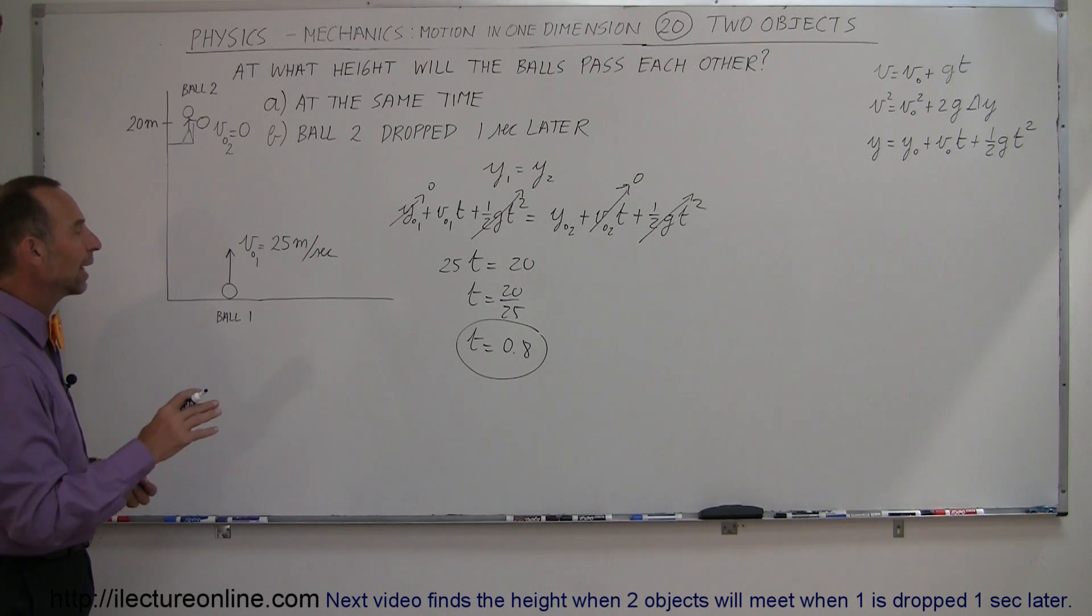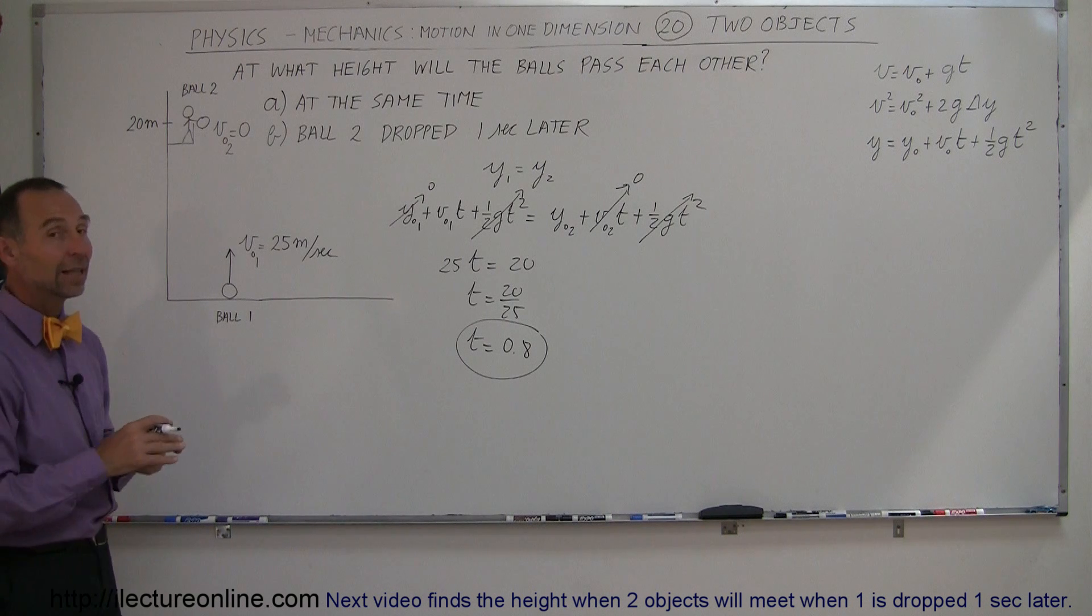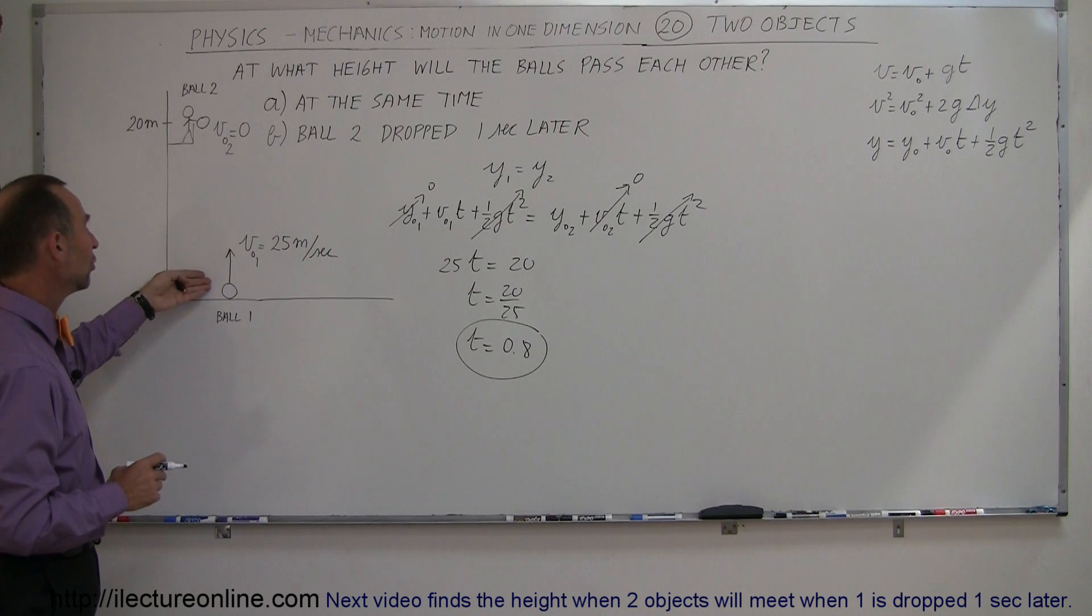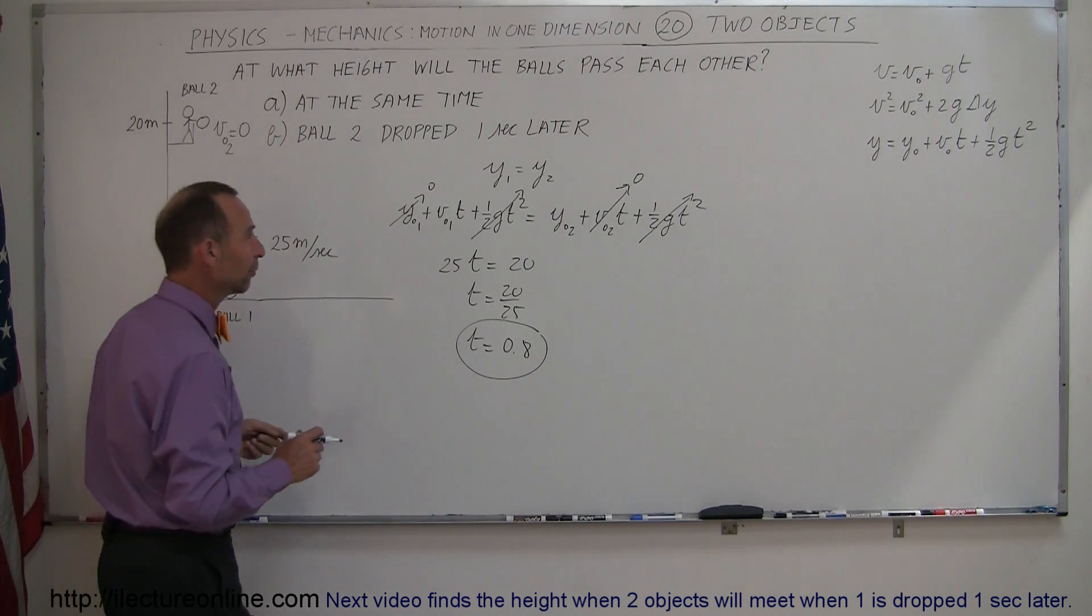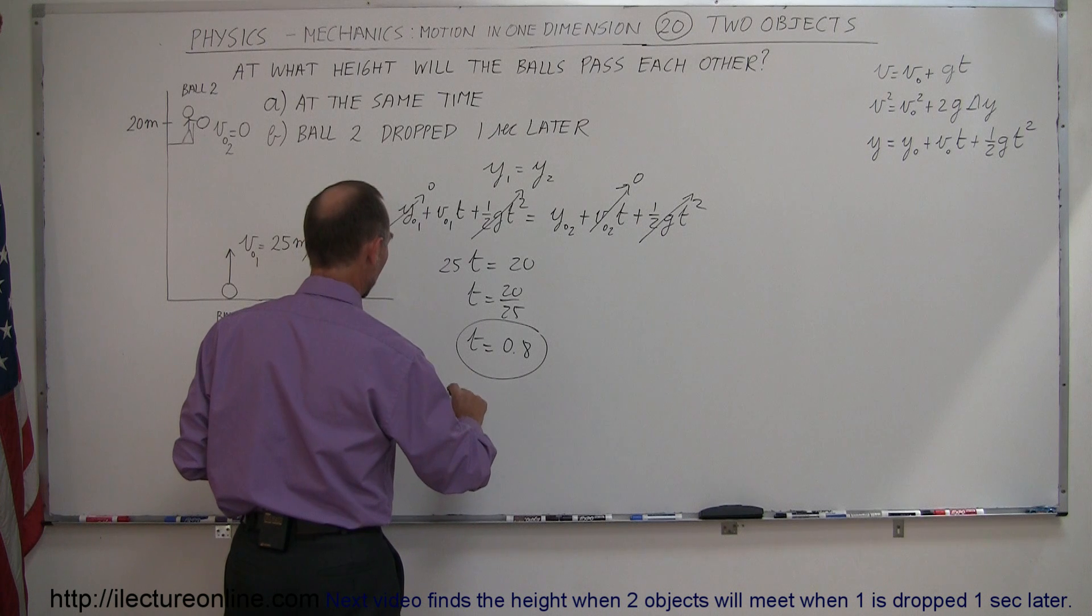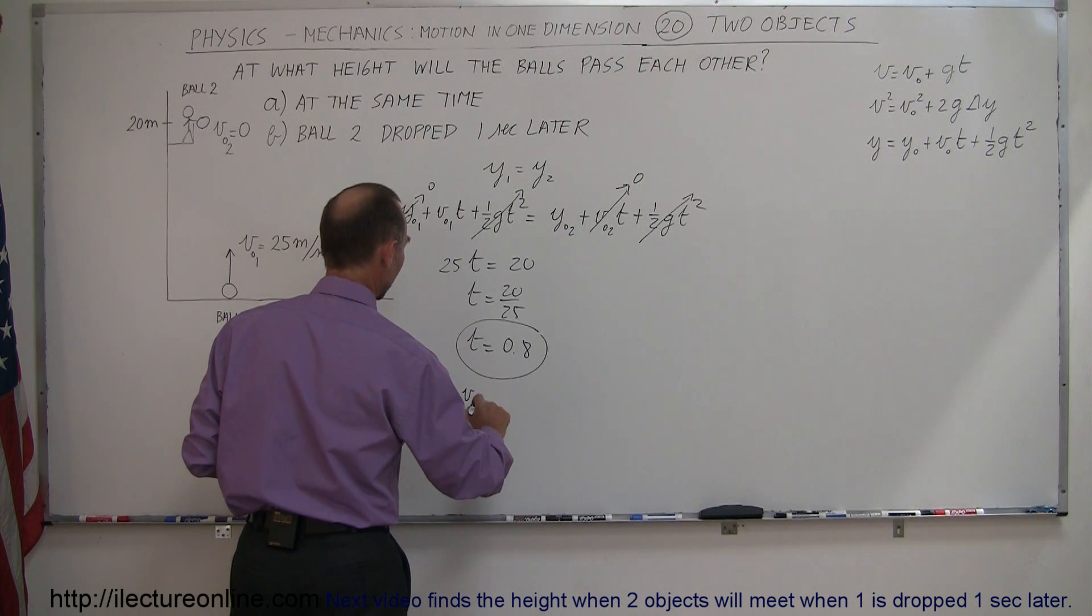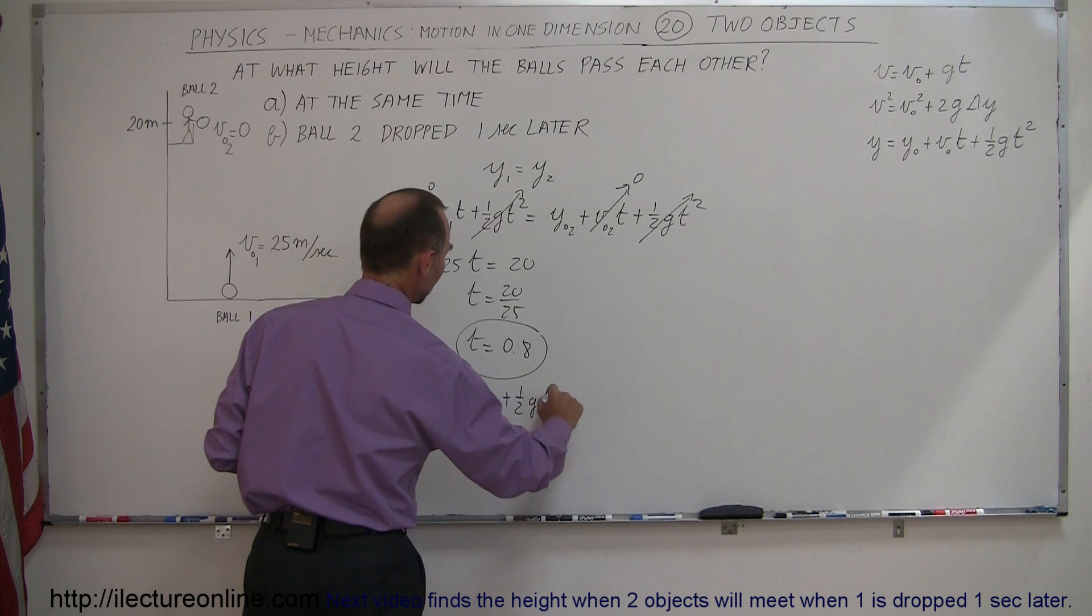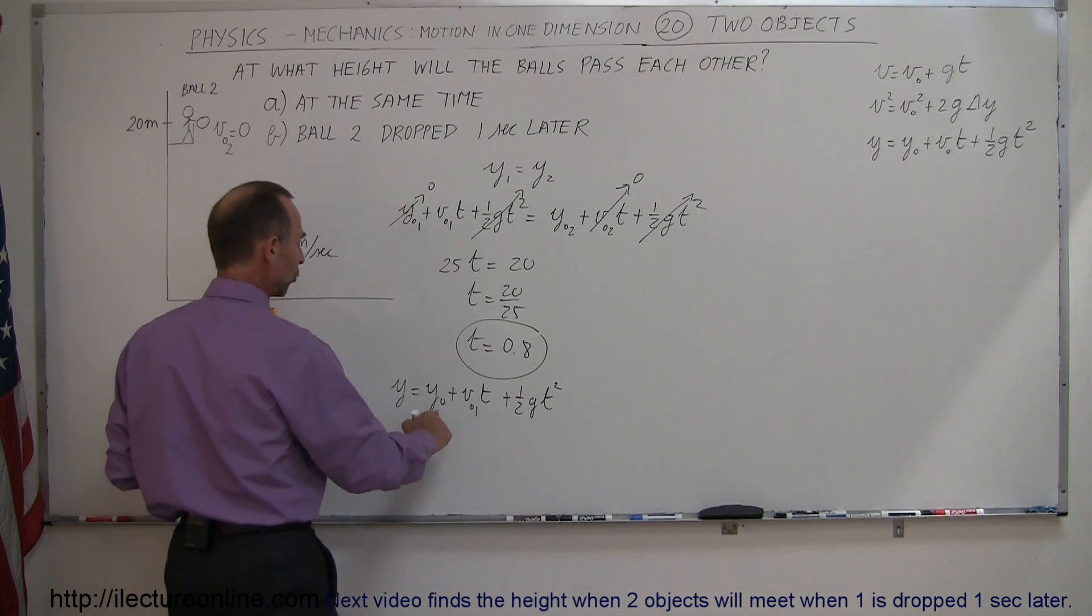Alright, so now that we know that that's the time at which they meet, now we have to figure out how high or how low that ball will be. Well, we can go ahead and use this equation right here. For the first ball, we can say that y is equal to y initial, plus v initial of the first ball times time, plus one-half gt squared. So, now that we know what time is,